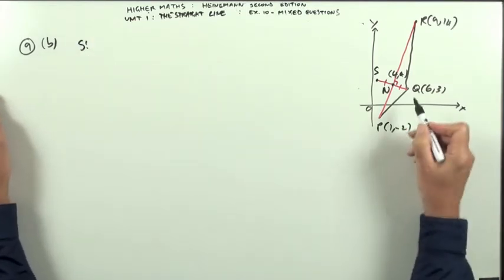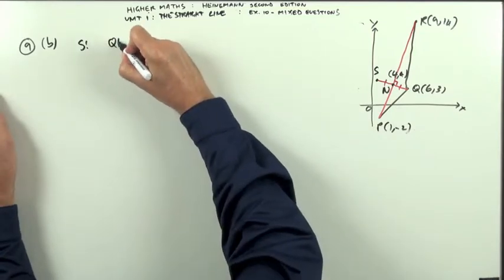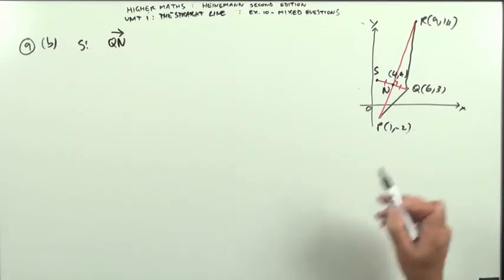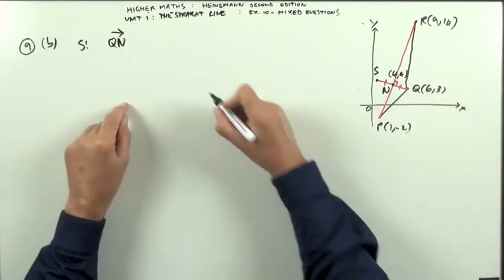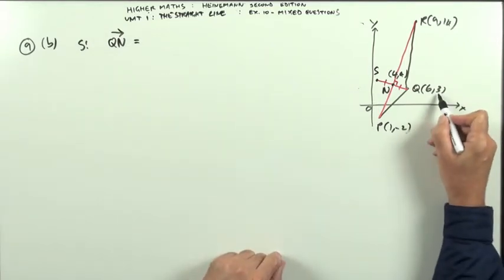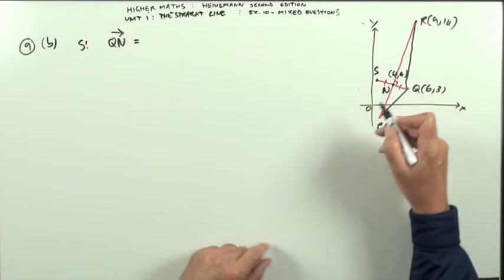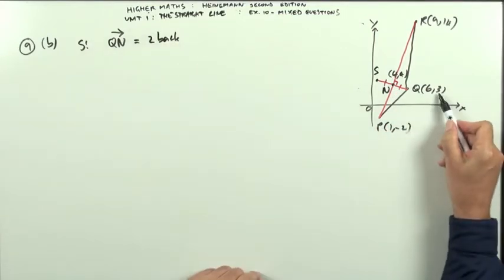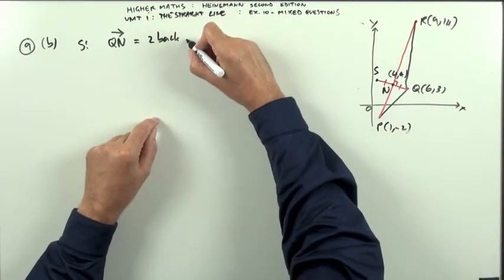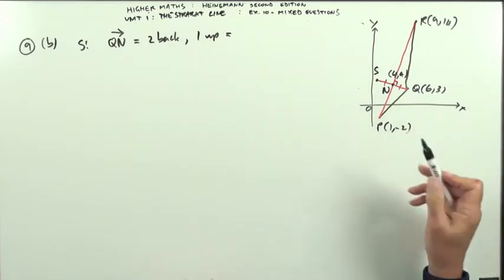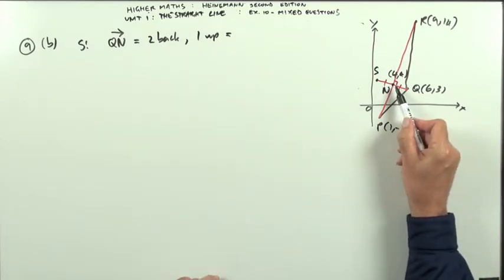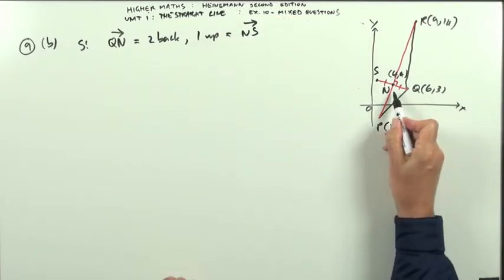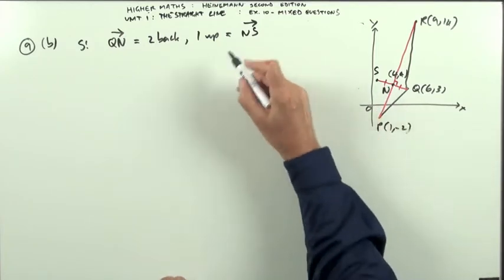I want to get S. Well, I would say, to go from Q to N, doesn't mean the length of QN, it means the steps it takes to go from Q to N, from (6, 3) to N, to (4, 4), would be, well, starting at an x-coordinate of 6 and going back to 4 means I'm going 2 back. And starting at 3 for the y-coordinate and arriving at 4 means I've gone 1 up. I've gone 2 back, 1 up. And those steps must be the same as the steps needed to get from N to S. That's the same as the move that would go from N to S. You go 2 back, 1 up. So S is going to be 2 back, 1 up from N.